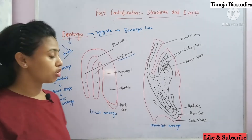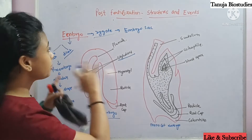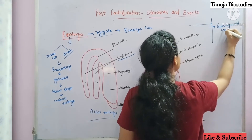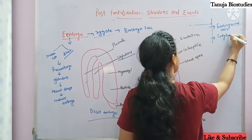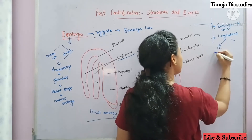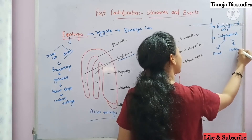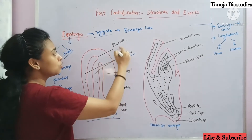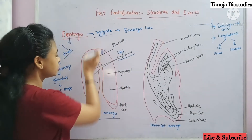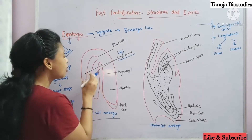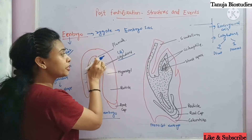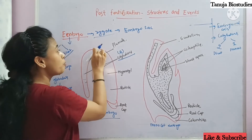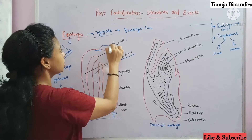I have shown two structures of monocot and dicot. Let's first look at dicot. When we study the embryo structure, there are two main structures present: one is called the embryonal axis and the other is called the cotyledons. On the basis of cotyledons — if there are two cotyledons, we call it dicot; if one cotyledon, we call it monocot. In dicot, two cotyledons are present.